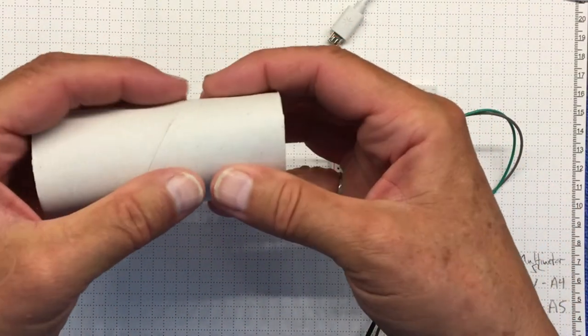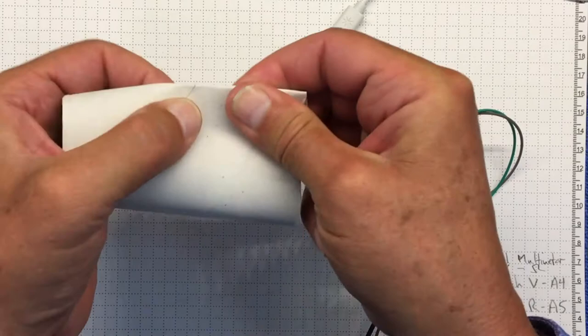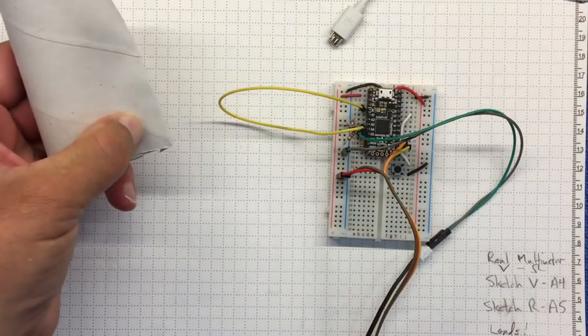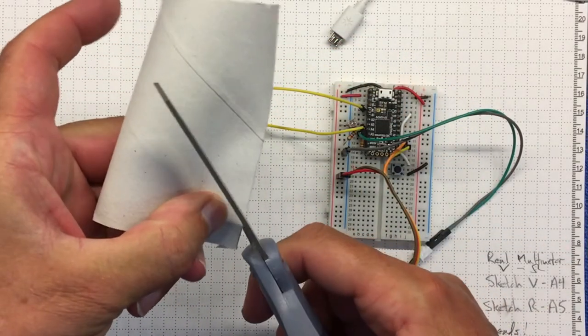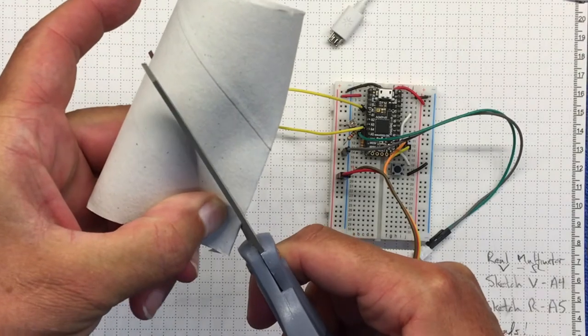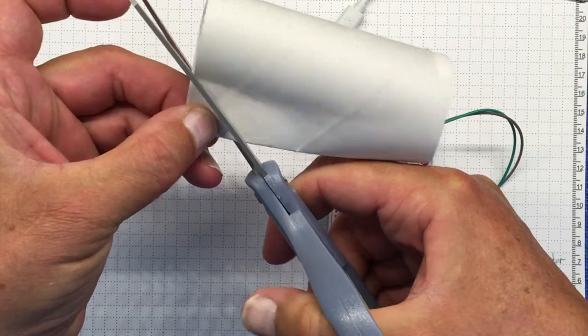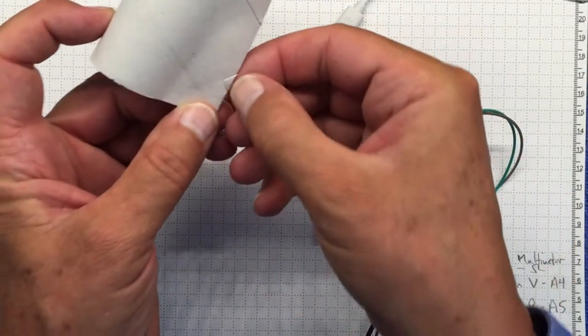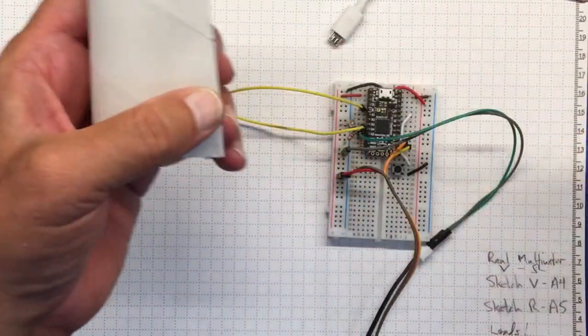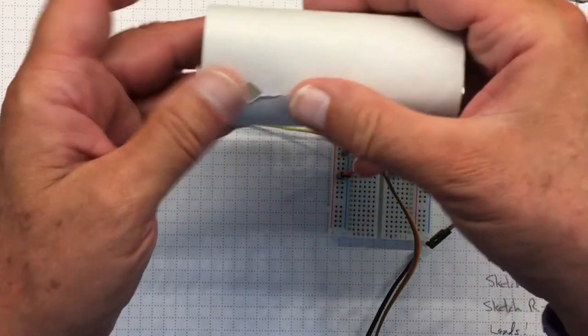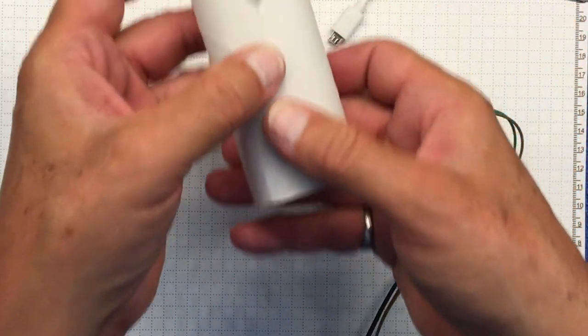I'm going to make a square hole because it's easier. I'm going to fold it like this and cut two cuts like that to make a square-ish hole about one quarter inch on a side, or about six millimeters on a side.